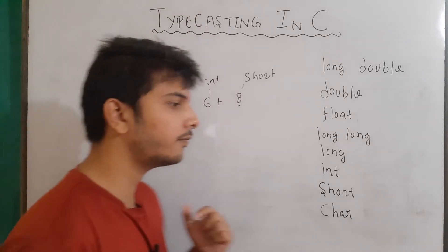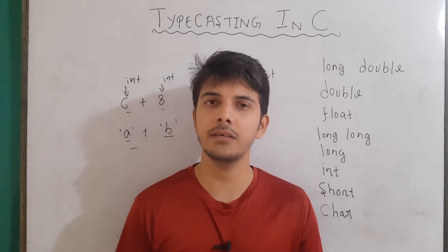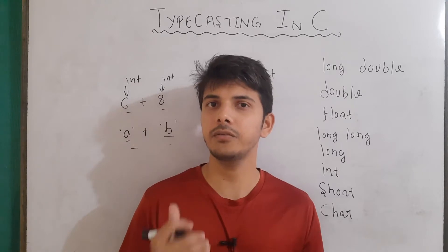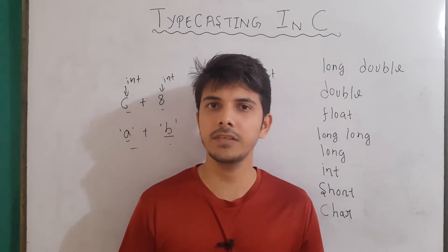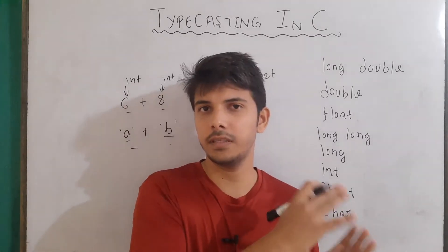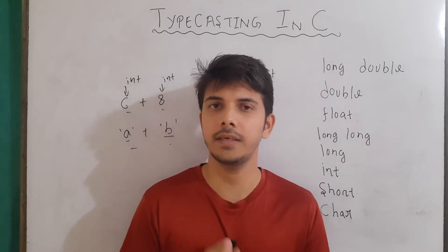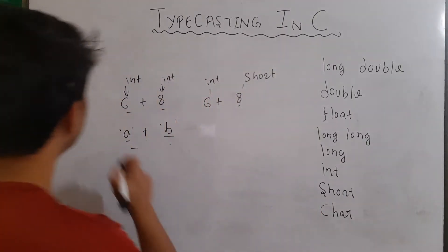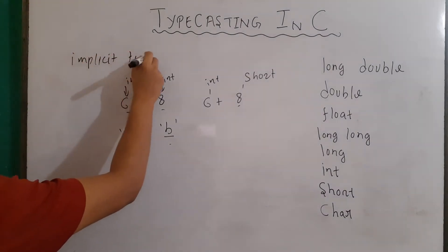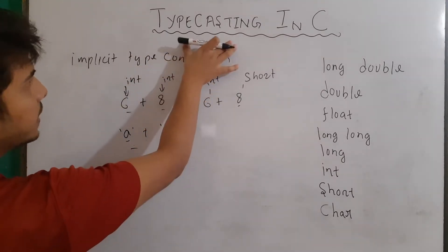There are two kinds of typecasting: implicit and explicit. In implicit type conversion, it is the compiler that will promote or demote the data of one data type into another. In explicit type conversion, it is the programmer who tells the compiler to convert data of one type into another while performing some operation. Note that type conversion is also known as typecasting.